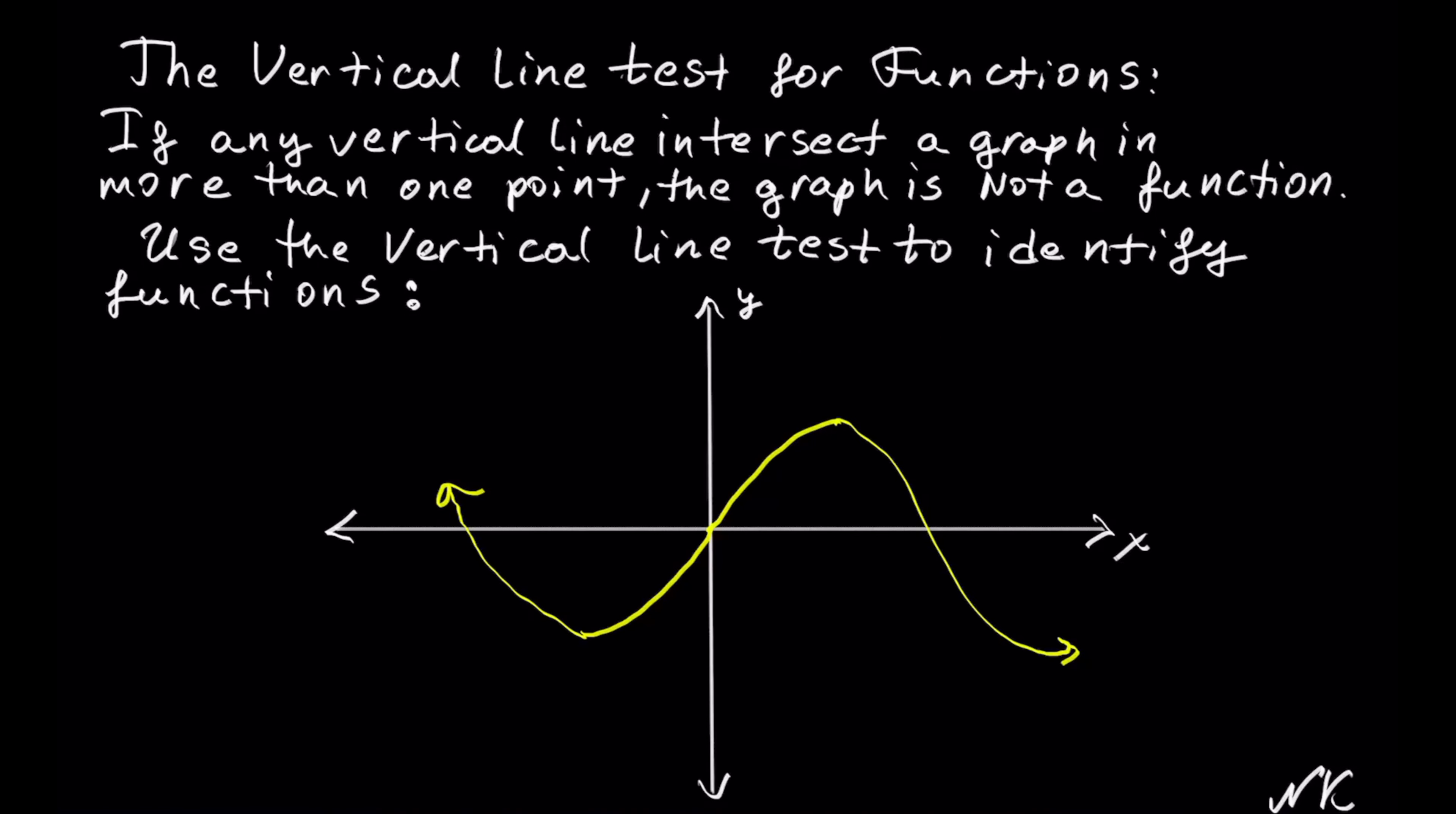In this example we have what looks like a sine curve. If we test it visually with vertical lines, we can see that they are crossing this graph in only one place, no matter where I draw a vertical line. So this example of a curve is a function. That's all.